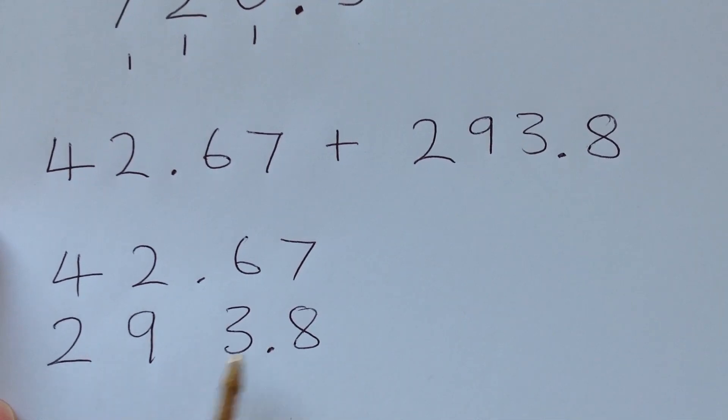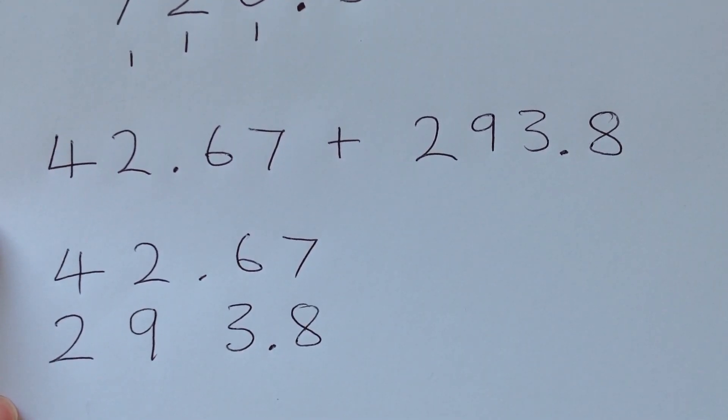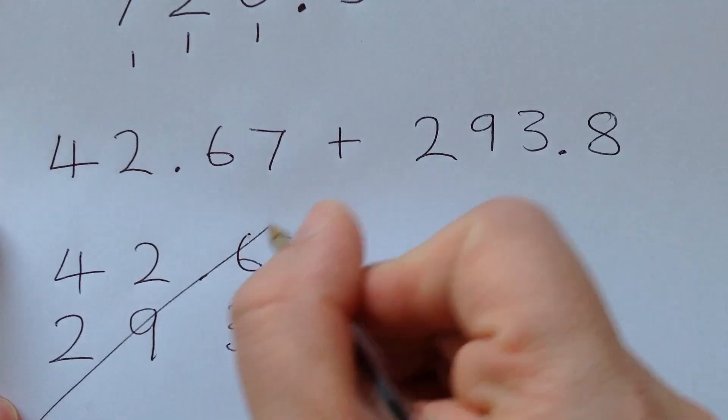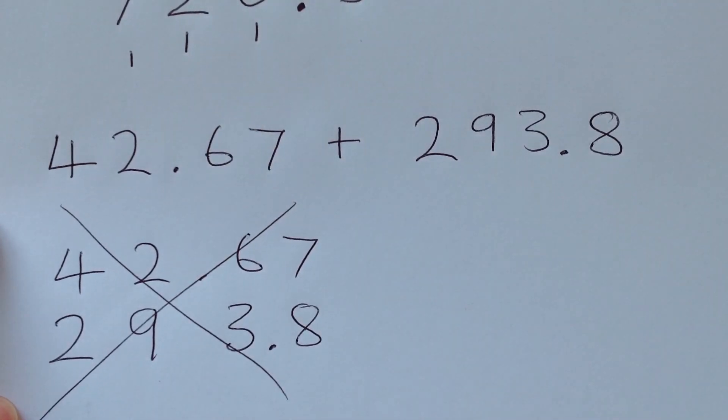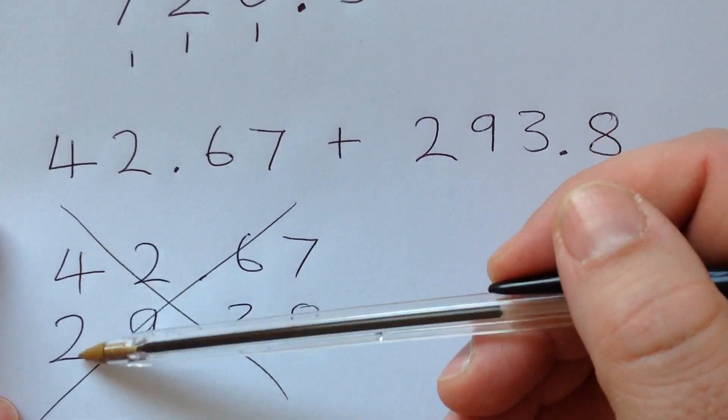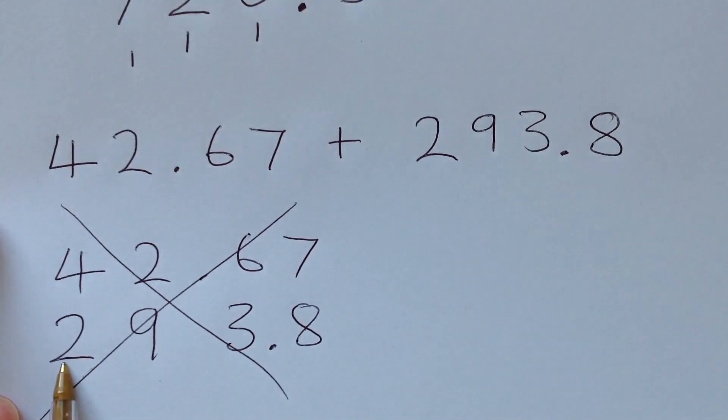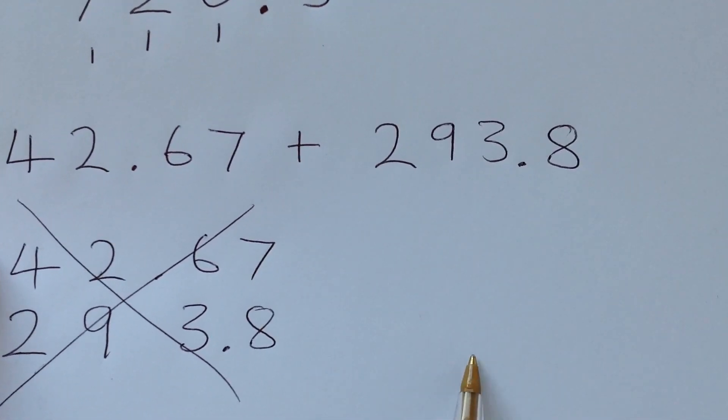Now, if I add these together, I'm going to get the wrong answer. And the reason I'm going to get the wrong answer is because I haven't got my columns right. This is my tens column, but it's got 200 in it. This is my ones column, but it's got a 90 in it. So the crucial thing I have to do, and I'm going to do it over on this side, is to line up my columns perfectly.